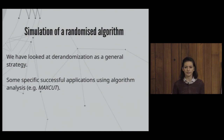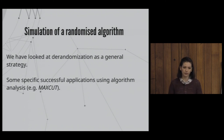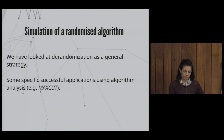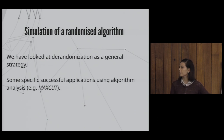There are also specific algorithmic derandomization applications, such as MaxCut, where a strategy called conditional probabilities can be used. However, knowing these specific strategies does not help us reason about general complexity classes and their relationships — it just gives us efficient algorithms in practice.